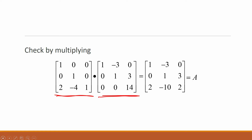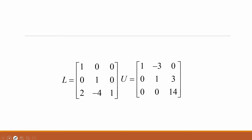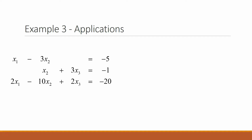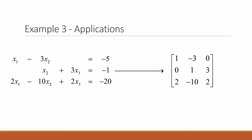This would be the final answer for the LU factorization of matrix A. LU factorization can be utilized to solve a system of equations. We are given a linear system, and if we convert this to a non-augmented matrix, the result is [1, -3, 0; 0, 1, 3; 2, -10, 2]. This matrix is the same as in Example 2.